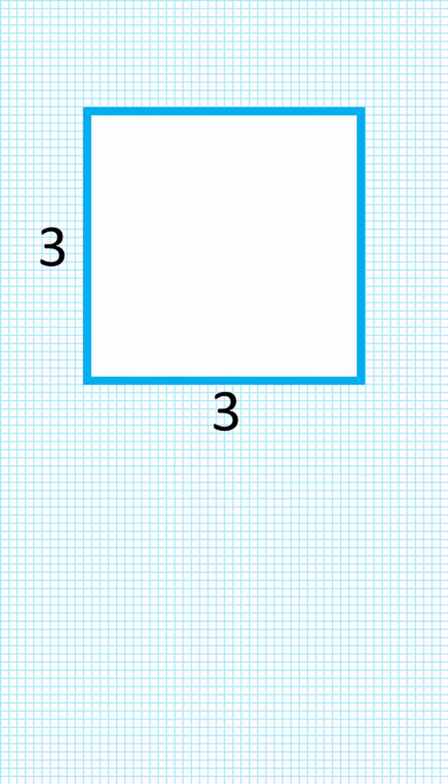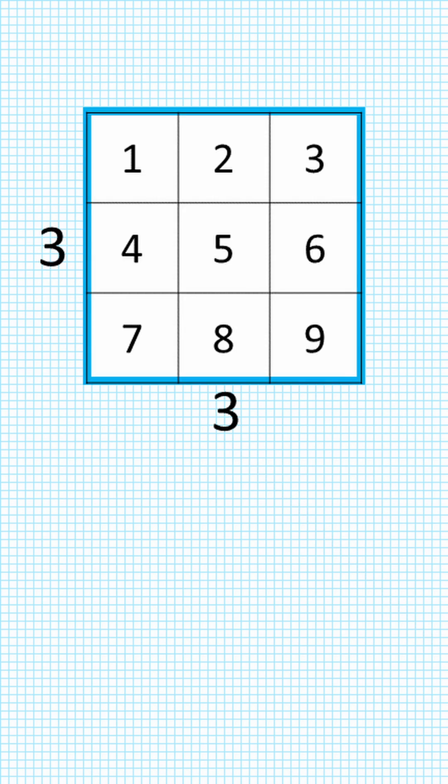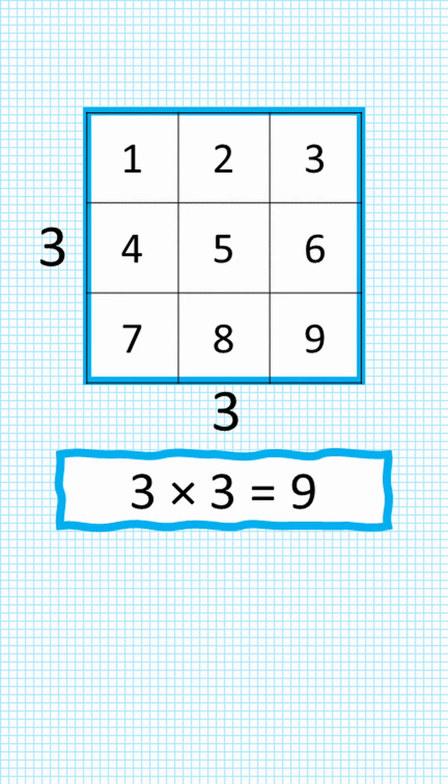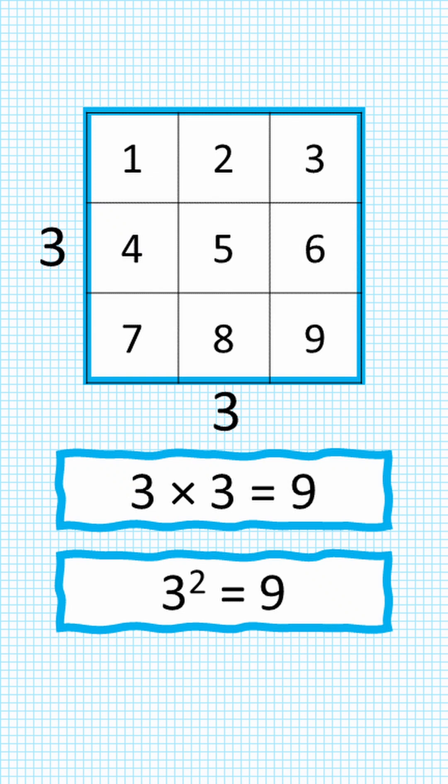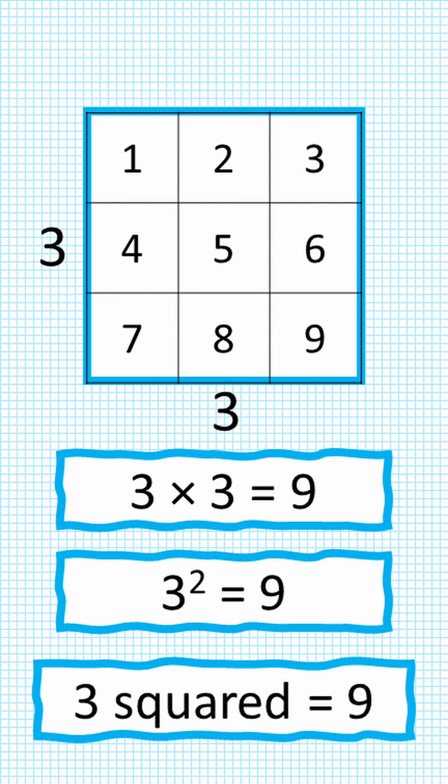Here's another square. It's 3 by 3. It has an area of 9 squares. So we've got 3 times 3 equals 9, or 3 to the power of 2 equals 9, or 3 squared equals 9.